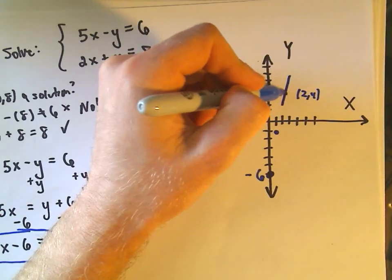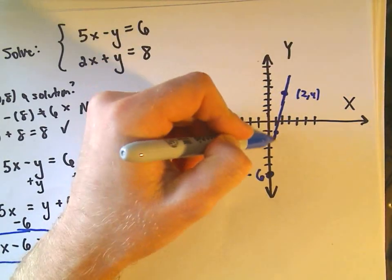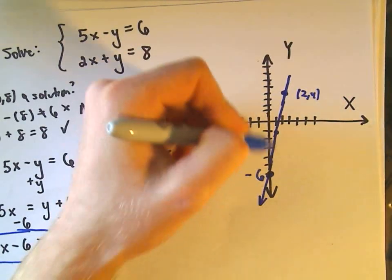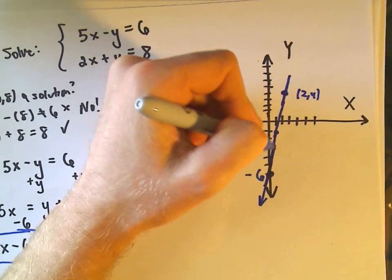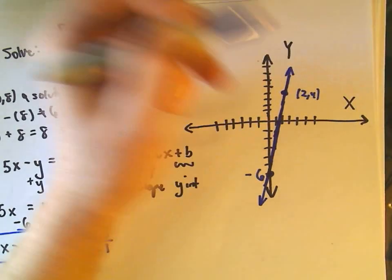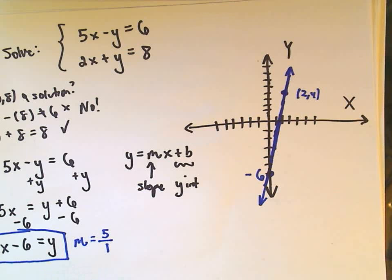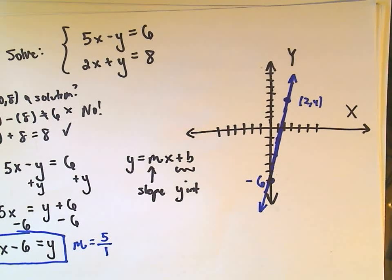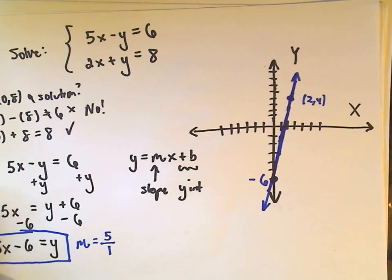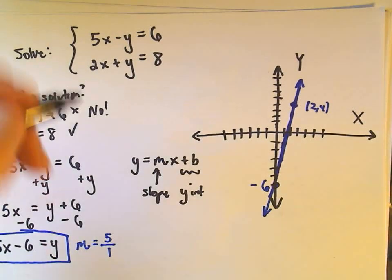And again, all we really need is just two points, but I went ahead and graphed an extra one. That is supposed to be a line. If I had nice pretty computer software, it would look a little bit more like a line. So hopefully that's good enough. So that's one of our lines. And then all we have to simply do is graph the other line as well.